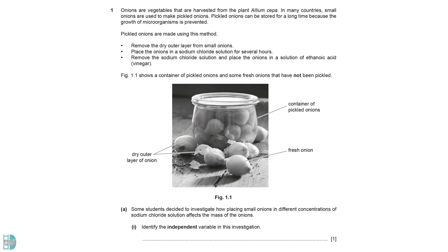Question 1 discusses an investigation to determine how different concentrations of sodium chloride solution affect the mass of the onions. An independent variable is the factor that the researcher manipulates or changes in an experiment to observe its effect on another variable. In this case, it is the concentration of sodium chloride solution.